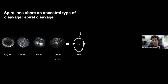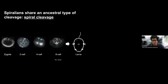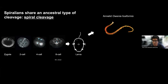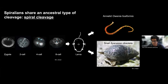What makes spiralians so nice is that they share a common ancestor type of cleavage called spiral cleavage, where the division is stereotypical. We can see what the cells are going to become, and a lot of them will make what we think is also a homologous trochophore larval stage. They can swim in the water column, and even though they have this very conserved early cleavage and conserved larval stage, they can make really divergent types of body plans in the adult, such as this worm that is an annelid segmented worm, which is very different from a snail.